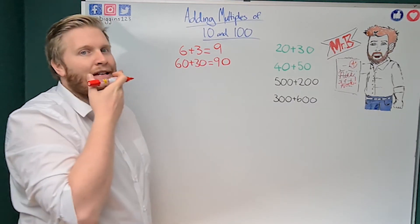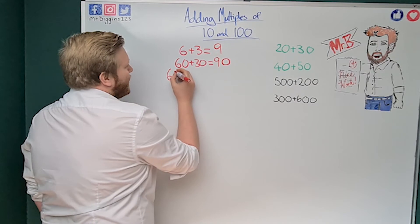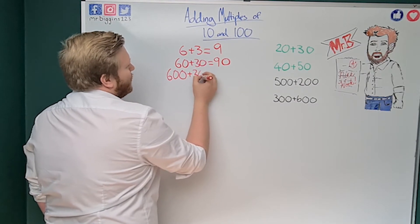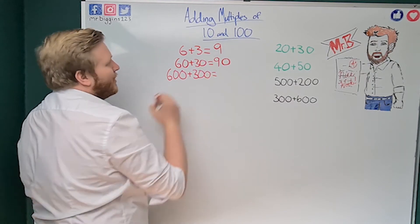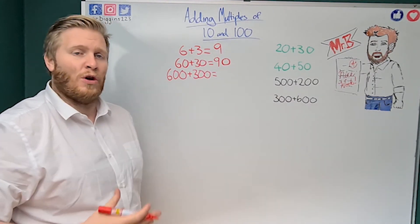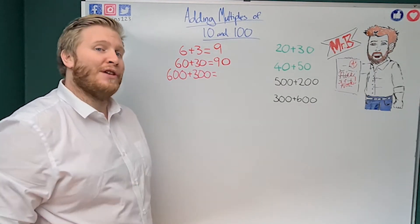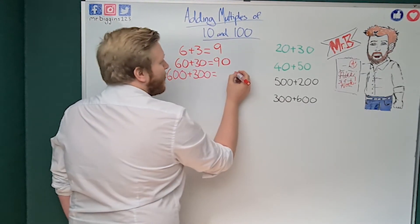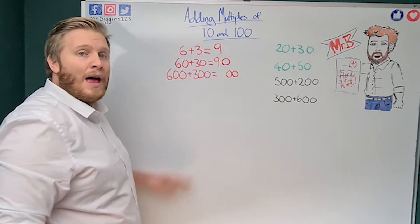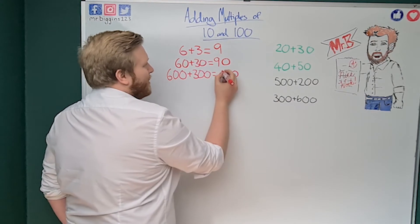So nine tens is 90. And if I move even further down, if I've got 600 plus 300, now I'm adding two three-digit numbers and it looks more difficult. But again, in our ones and tens columns we have zeros, and zero plus zero is nothing — those aren't going to change. Now I just need to add my two hundreds numbers: six plus three again.